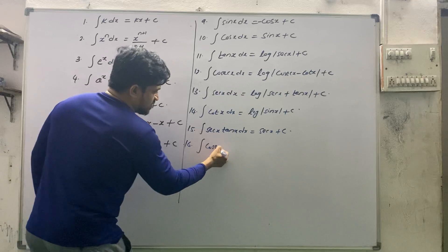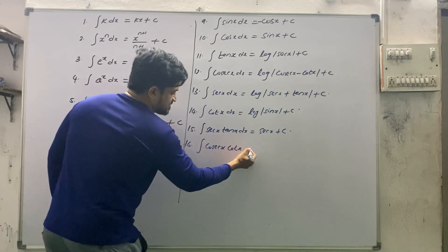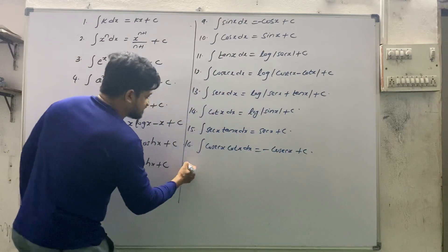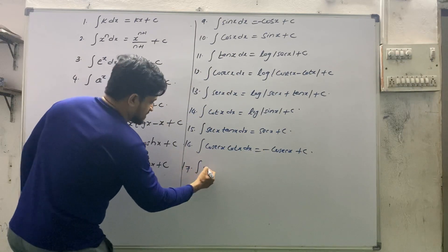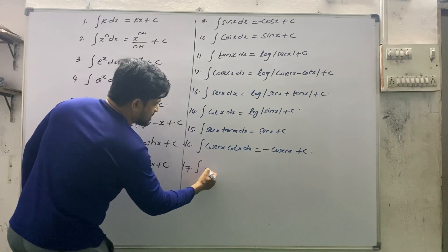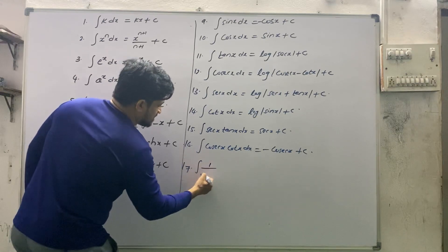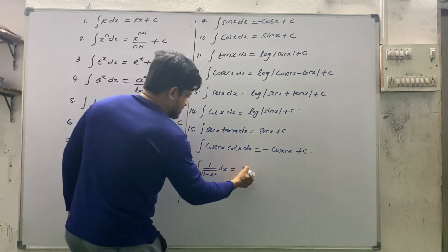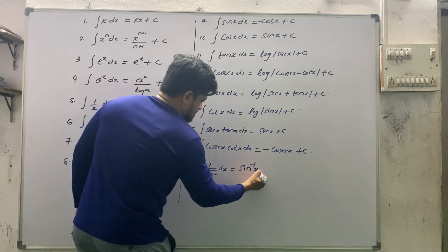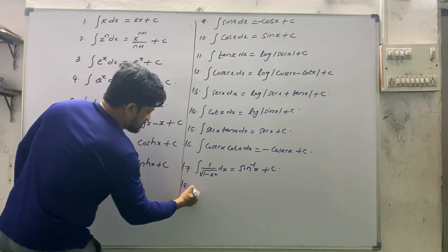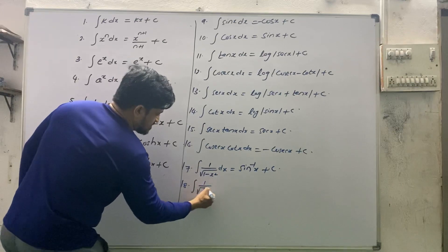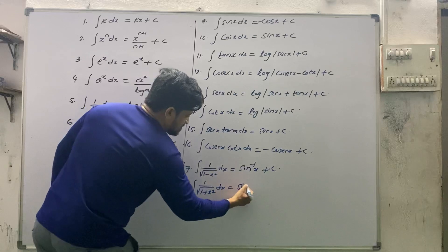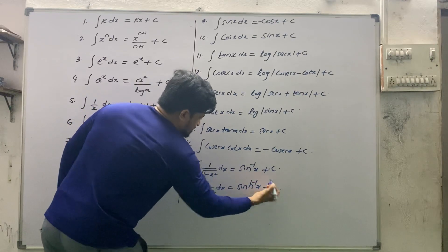We also have: integral of cosecant x · cot x = −cosecant x + c. And sinh inverse x + c for a related formula.